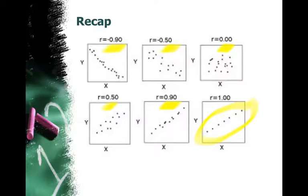You do not want to rely on your eyesight for the correlation coefficient. You want to find the actual value itself to give you a better indication of the strength of the relationship between x and y.